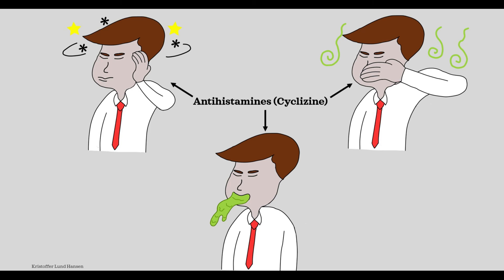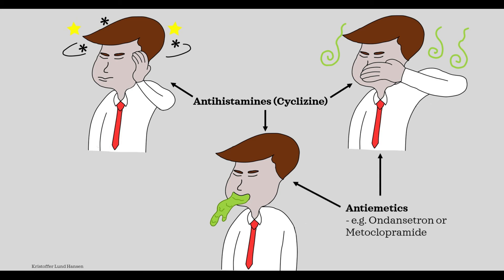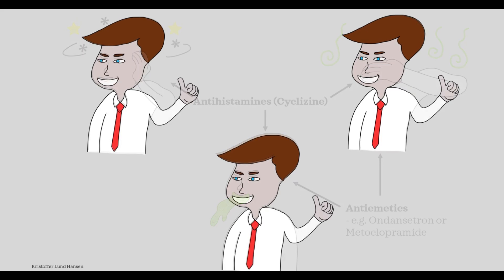One great drug that affects all of these symptomatologies is antihistamines — for instance, cyclizine, although there are many other types — a great way to start. You can also use antiemetics like ondansetron or metoclopramide to target the nausea and vomiting specifically. The main point of treatment is to make the symptoms bearable.